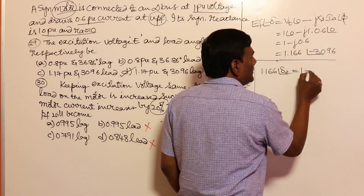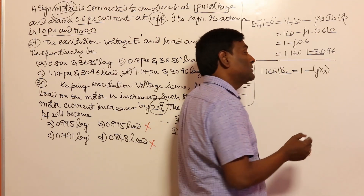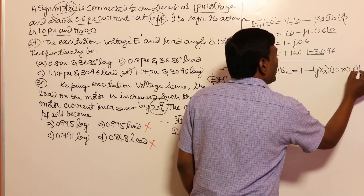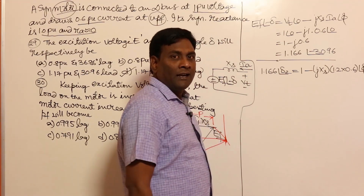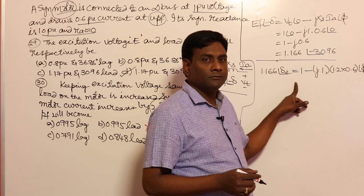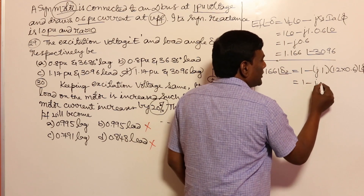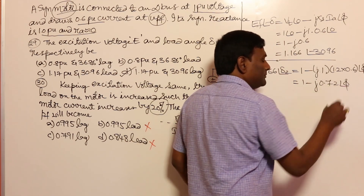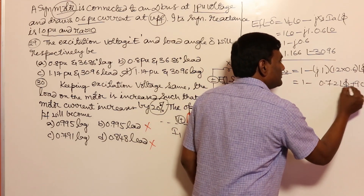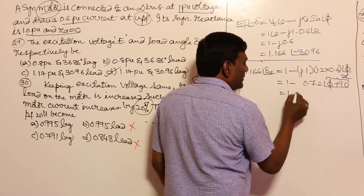VT is going to be same, minus j·Xs, and IA is 20% more — so 1.2 times 0.6 at angle phi. Ultimately if it is lagging, phi should become negative — we will confirm at the end. This becomes 1 minus j times (1.2 × 0.6 = 0.72) at angle phi. Since j is 90 degrees, this is at angle (90 + phi). Let me consider (90 + phi) as x.